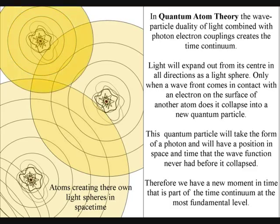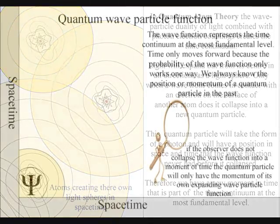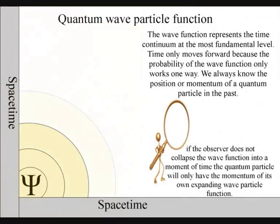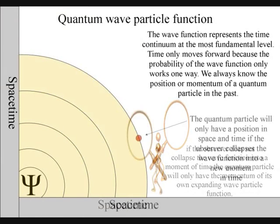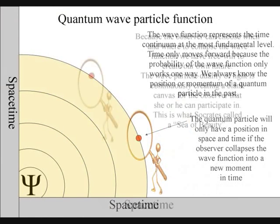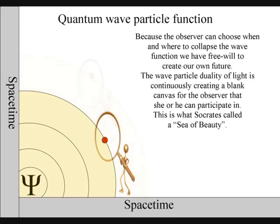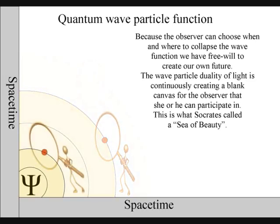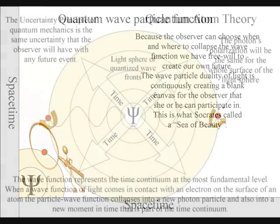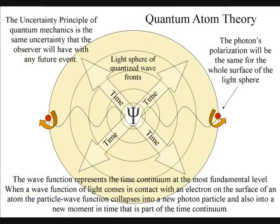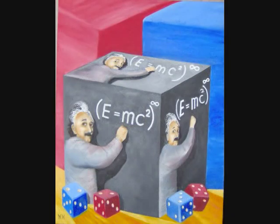The wave function in quantum physics represents the time continuum at the most fundamental level. The probability of the uncertainty principle is the same probability that the observer will have with any future event. Einstein was right, and something is missing from conventional quantum mechanics — it is a fundamental understanding of time. Atoms create their own space-time.